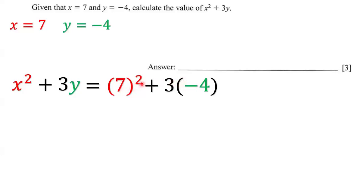What is 7 squared? Well, 7 squared is going to be 49 and 3 times negative 4 is negative 12.